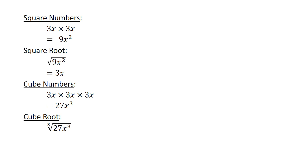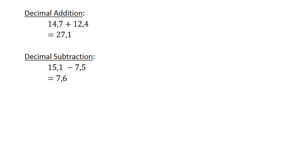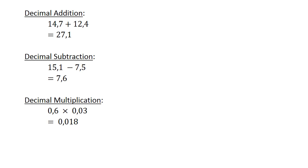Cube root of 27x to the power of 3 equals 3x. Decimal addition: 14.7 plus 12.4 equals 27.1. Decimal subtraction: 15.1 minus 7.5 equals 7.6. Decimal multiplication: 0.6 times 0.03 equals 0.018.